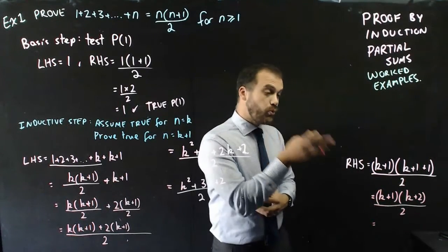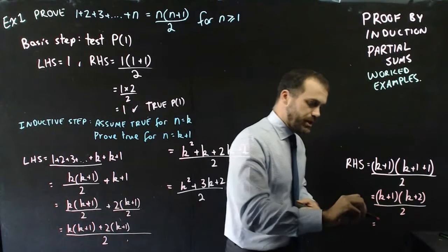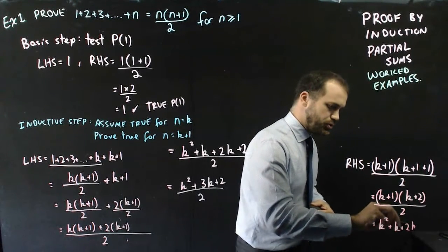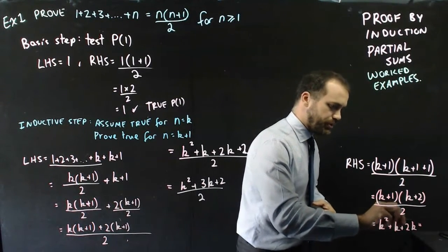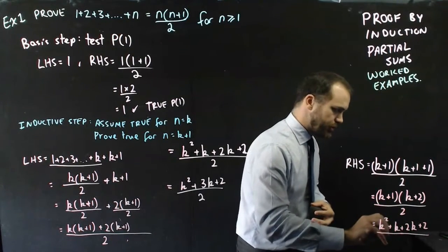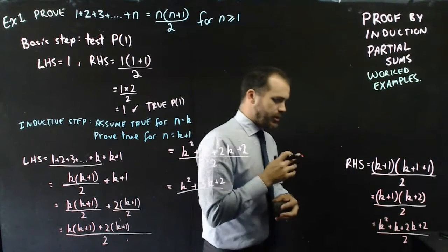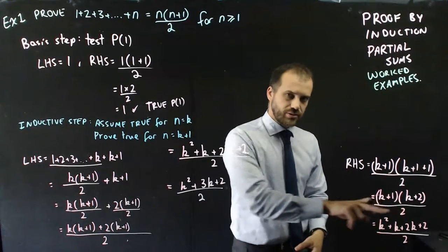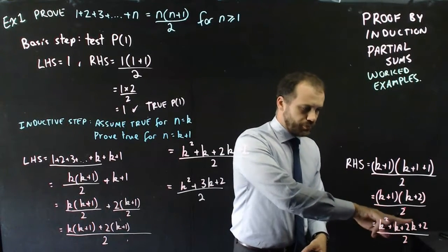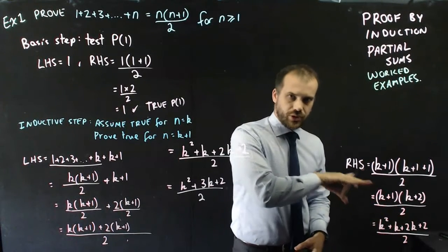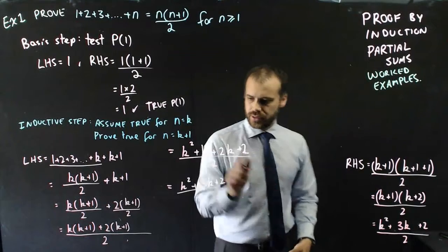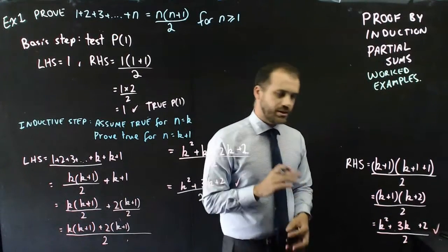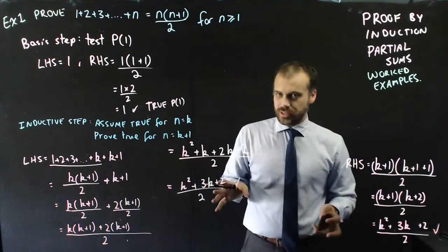Expanding the right-hand side brackets: k squared plus k plus 2k plus 2, all over 2. Combining k and 2k gives 3k, so the right-hand side is k squared plus 3k plus 2 over 2. The left-hand side looks like that, the right-hand side looks like that — they match. We're done.